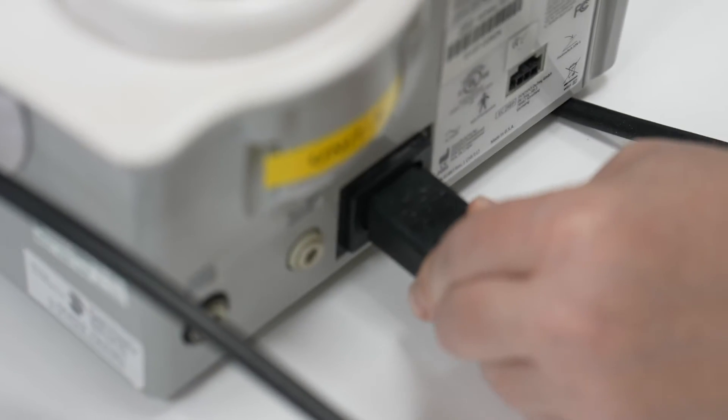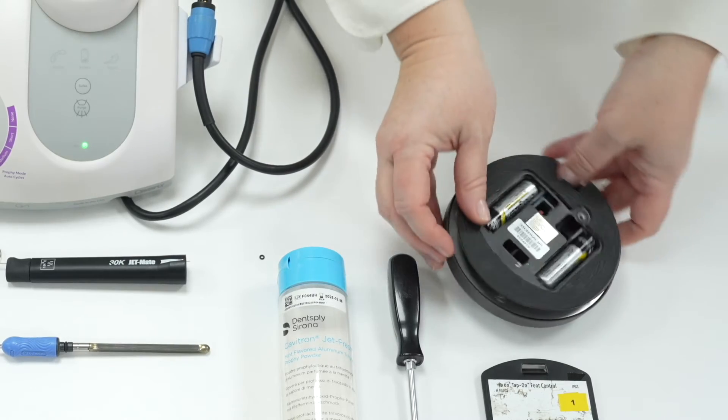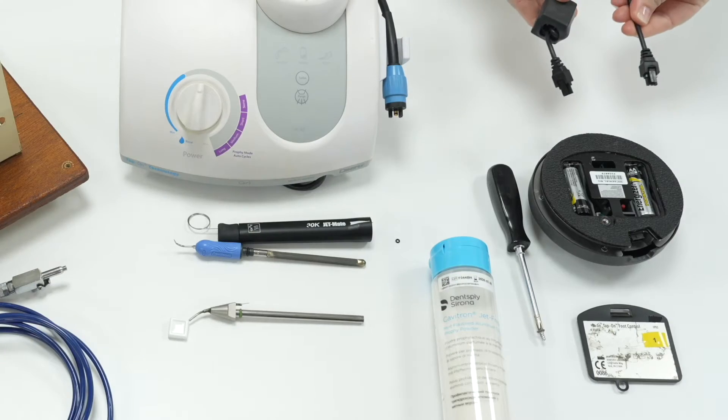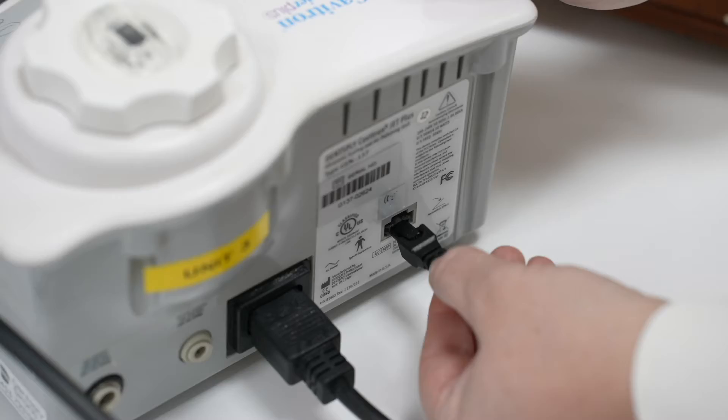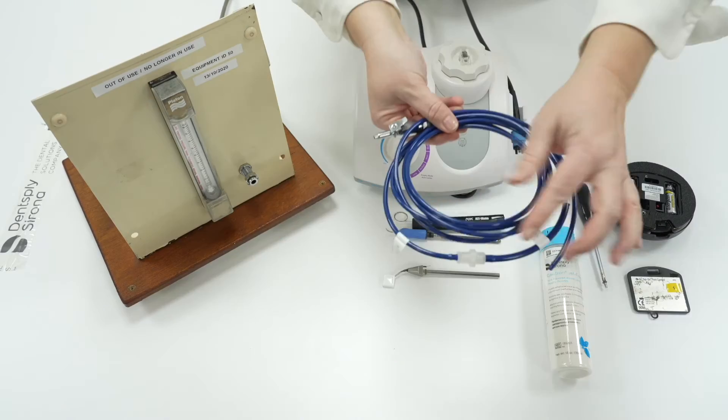The power cable is a standard kettle lead and the cordless tap-on foot pedal takes AA batteries. Should they run out there is an optional cable to plug in the foot pedal. The Cavitron Jet Plus includes an air line and water line with filter.